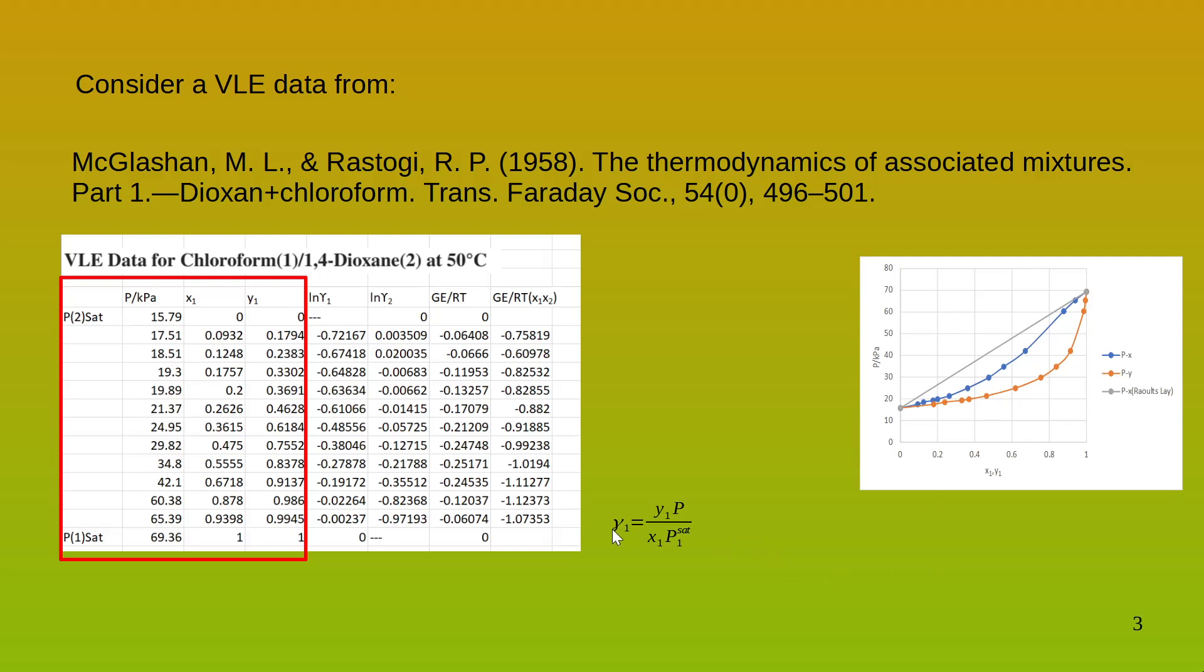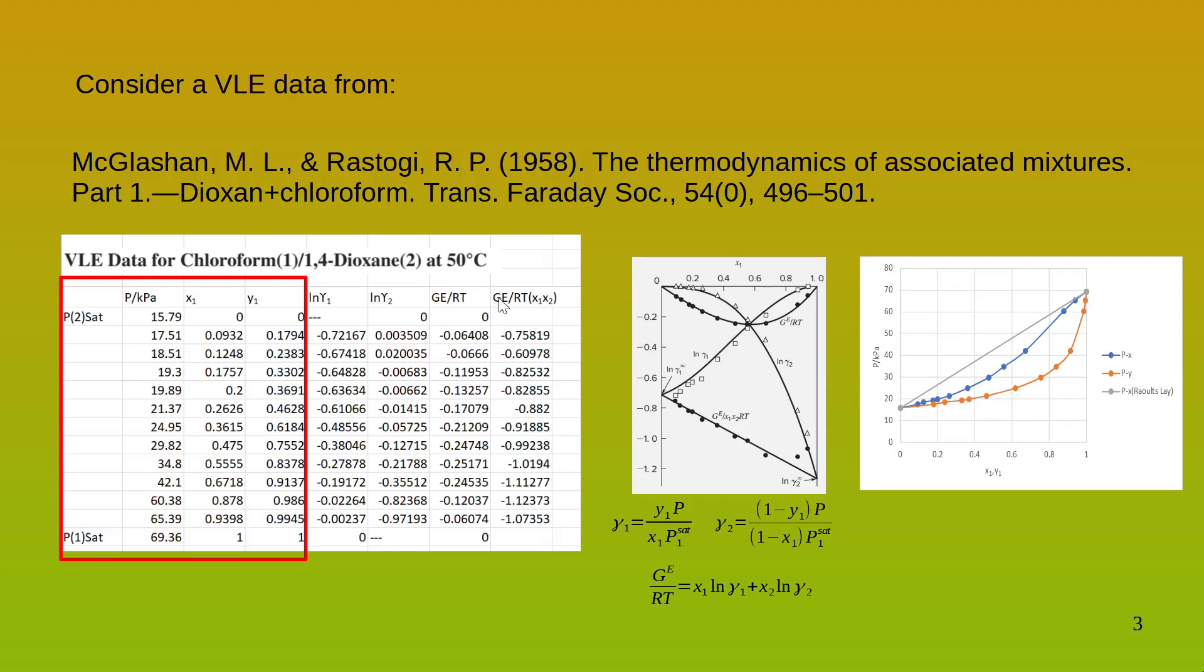Now, to calculate the gammas, we use the equation, gamma 1 is equal to Y1 P upon X1 P1 sat. Similarly, gamma 2 is also calculated because it's a binary solution. Now we calculate the excess Gibbs free energy, which is nothing but the summation of the partial Gibbs free energy and the mole fractions. We also calculate the excess Gibbs free energy over RT, X1, X2. Now let's see what each of these curves get us.